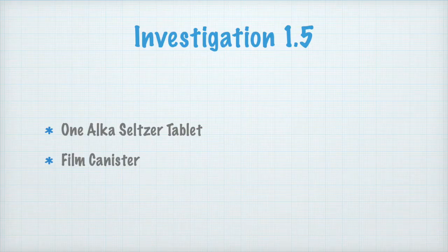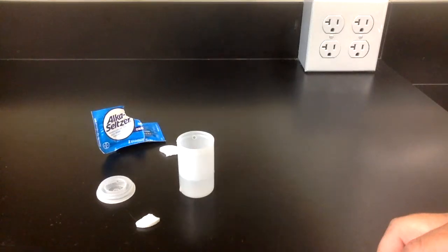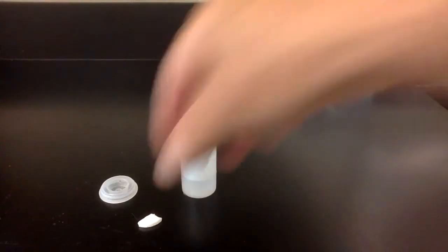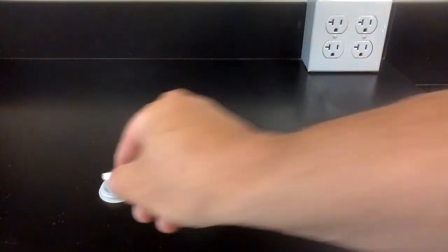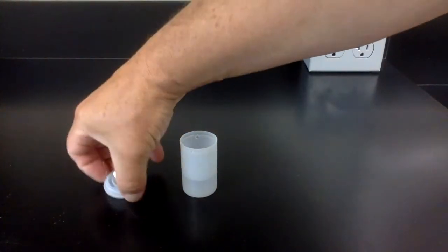Investigation 1.5 requires a tablet of Alka-Seltzer and a film canister. The film canister is half full of water and you'll place a quarter chip of the Alka-Seltzer into the cap of the film canister.